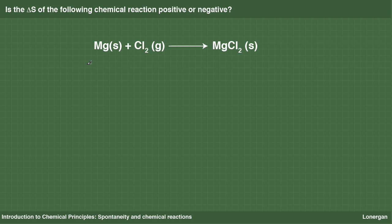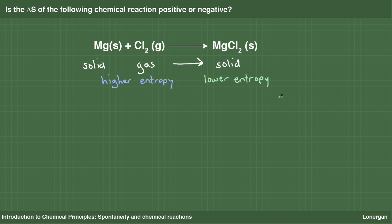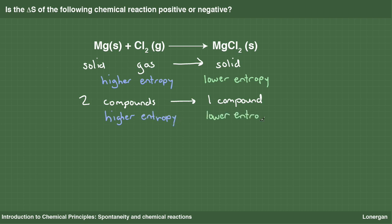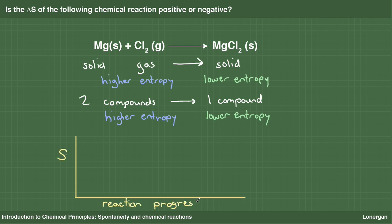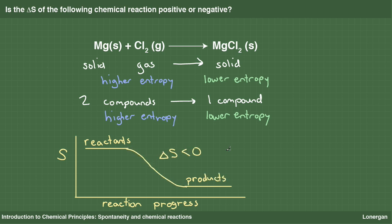Here is an example: is the ΔS for the following reaction positive or negative? The reaction of magnesium, a metal, with chlorine gas, a non-metal, to form the ionic solid magnesium chloride. A solid and a gas are converted to a solid. As gases are higher entropy than solids, this is a decrease in entropy. There are also two compounds in the reactants and only one in the products, implying a further reduction in entropy. The entropy change is negative because entropy decreases going from reactants to products.